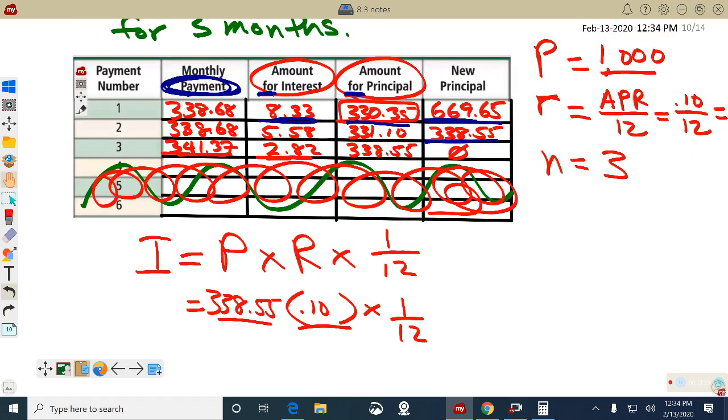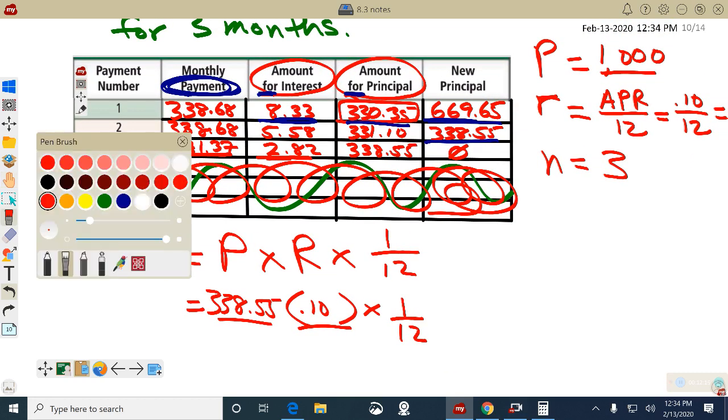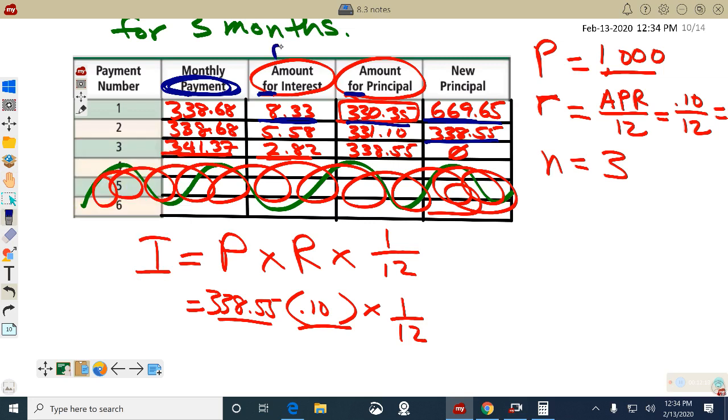I think for those of you who are struggling with this, you got to get in your mind, like beat it in your head that this column is for what does the bank keep for every payment and what is going off for paying off the loan is on this one. You got to separate the two. The bank has to make their money for lending you the money. That's what interest is all about. Any other questions? All right. The last example you're going to do on your own.